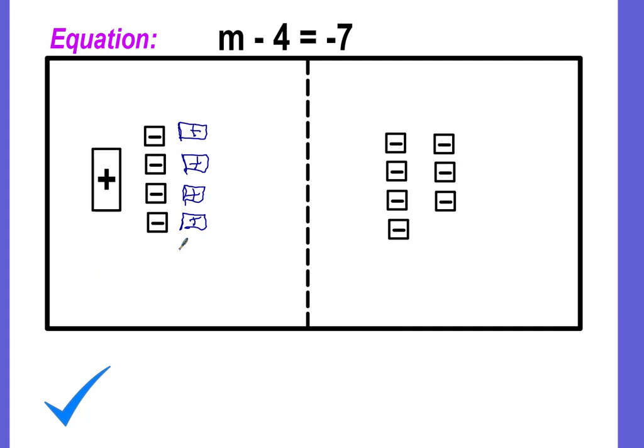If you look, our scale is still not in balance. It's out of balance. When we added the four positive unit tiles on the left, we have to then make sure to add four positive unit tiles on the right so that our scale stays in balance. Once we're back in balance, we can remove our zero pairs. So I'm going to cross out those four, and I'm going to cross out these four. And I'm left with m, which is our algebra, our x tile, is equal to negative three.